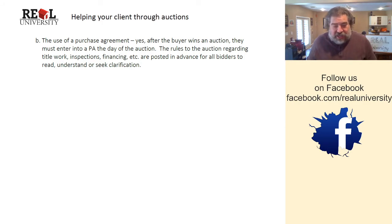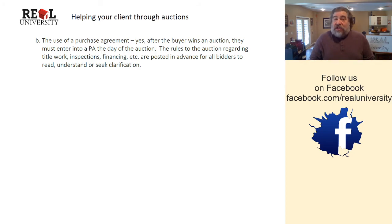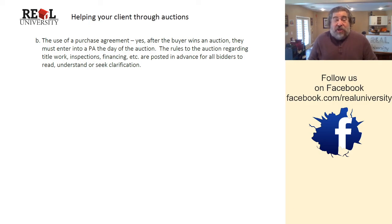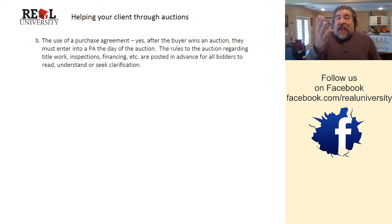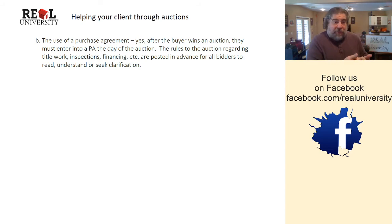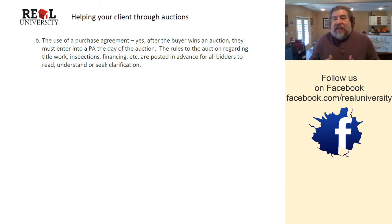At an auction, there will be a purchase agreement, and that purchase agreement is typically signed by the winner of the auction before they leave the auction site. In the pre-auction package that buyers receive when they register, it's going to have all of the rules regarding pre-listing title work, where you're going to close, inspection results, financing details — any items that would be in a standard purchase agreement need to be posted as part of the auction for all bidders to understand.